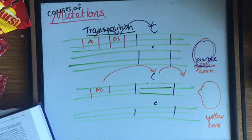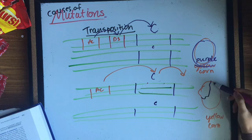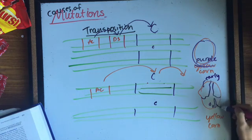Early transposition has big blotches of purple, while late transposition has little spots of purple.